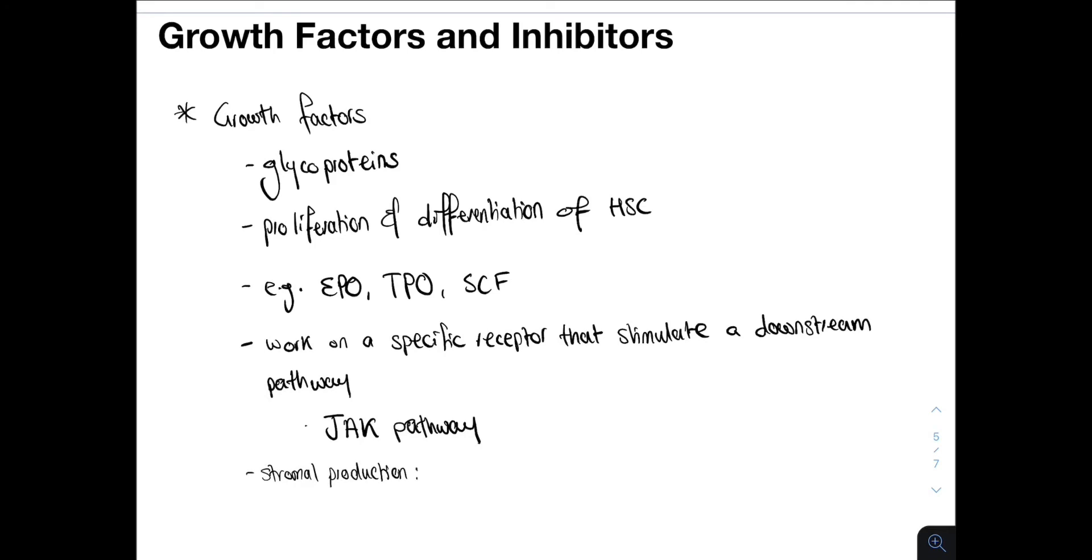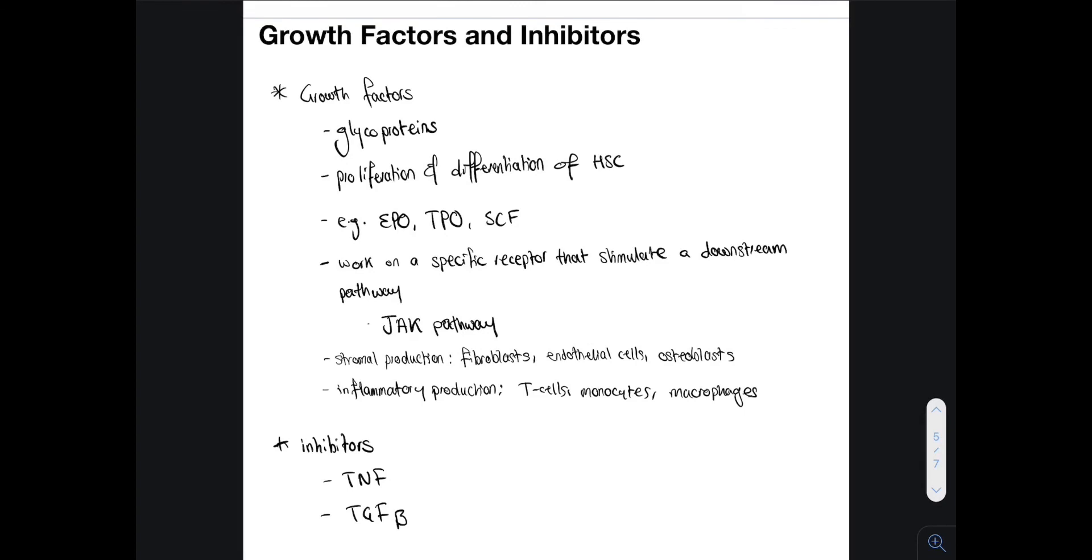Growth factors can be produced by stromal cells, for example fibroblasts and endothelial cells. They can also be produced by inflammatory cells at sites of inflammation, for example T cells, monocytes and macrophages. Many factors can also inhibit hematopoiesis. Two important examples include tissue necrosis factor and transforming growth factor beta. There are still ongoing studies on the use of these inhibitors in the treatment of blood cancers.